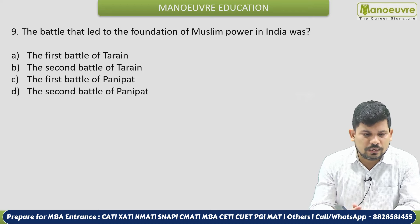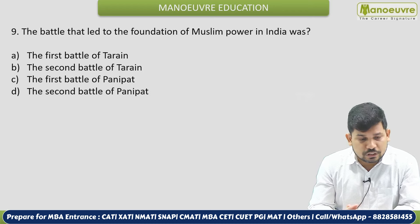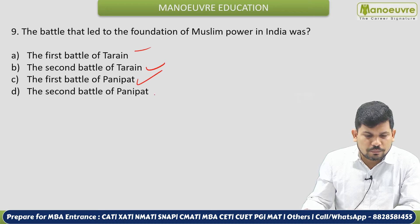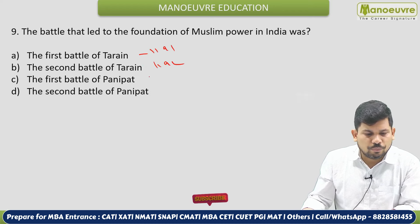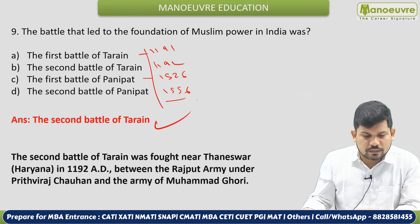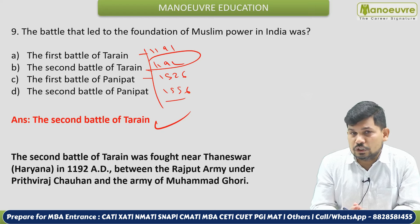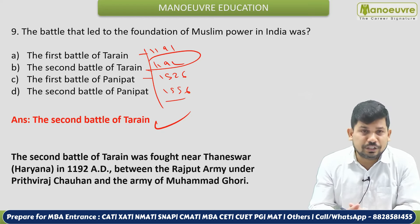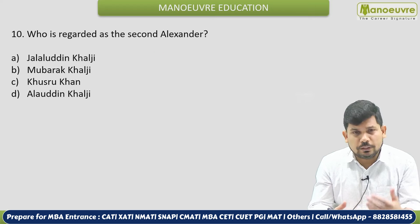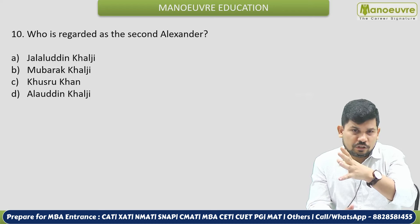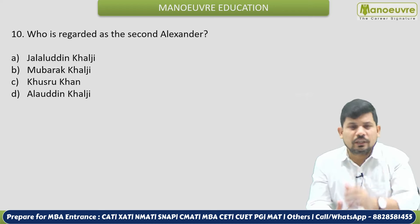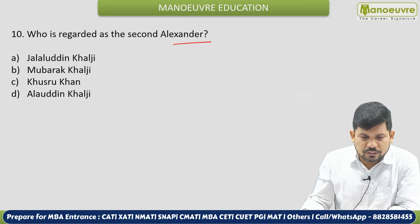Next: The battle that led to the foundation of Muslim power in India — First Battle of Tarain, Second Battle of Tarain, First Battle of Panipat, or Second Battle of Panipat? Remember the years: 1191 and 1192 for the two battles of Tarain; First Battle of Panipat 1526; Second Battle of Panipat 1556. The correct answer is the Second Battle of Tarain (1192), in which Muhammad Ghori defeated Prithviraj Chauhan, and from here the Muslim ruler period started in India with the Slave Dynasty.